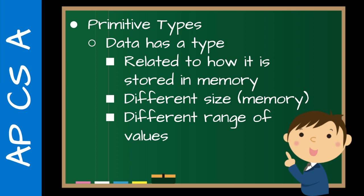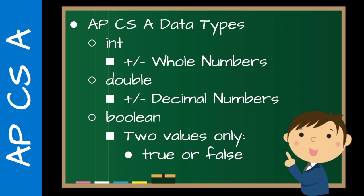The AP is very kind in this — students really only need to know three data types. Int, which is integer: positive and negative whole numbers. Double, which are decimal numbers, like 1.21. And Boolean, which has only two values: true or false — in the computer's memory that's a zero or a one. There are other types, but for the AP exam these are the only ones you need to focus on, and I almost never mention the others in my class.